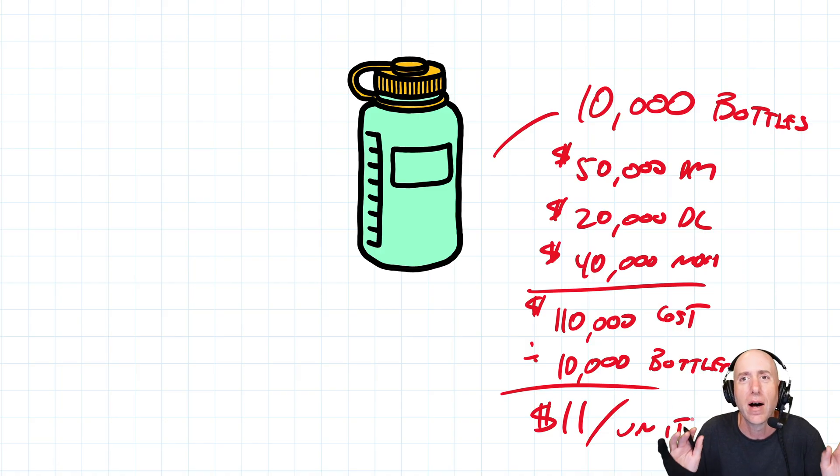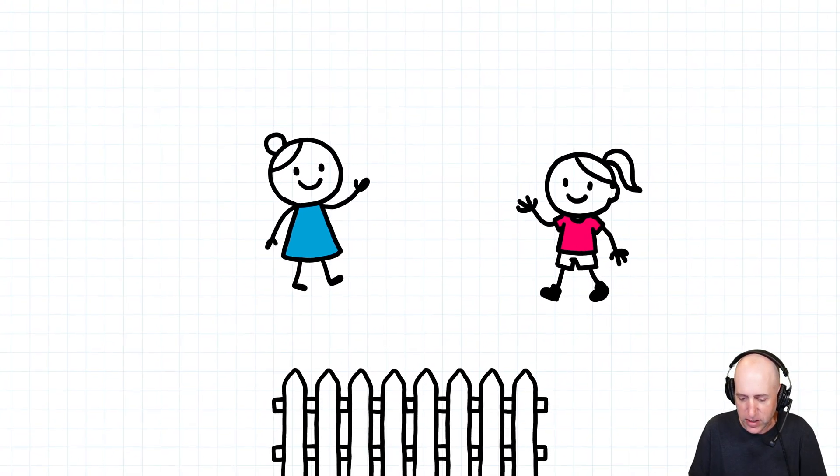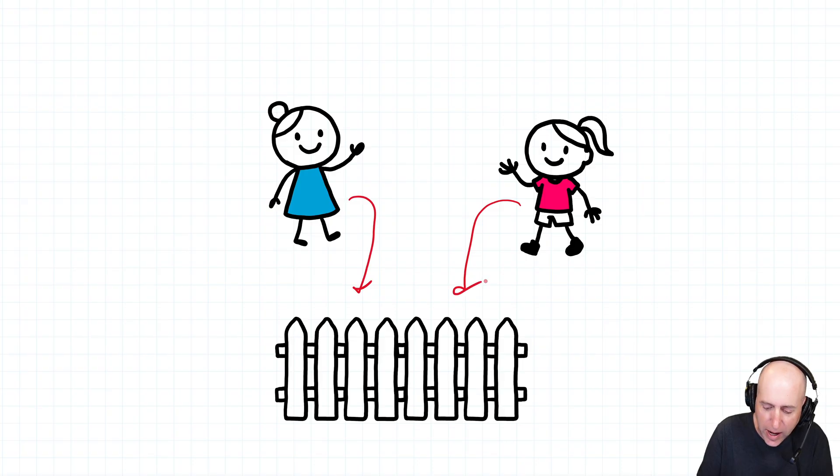So the key concept of the whole chapter is a concept called equivalent units. And to discuss equivalent units, I'm going to discuss these two sisters, Gabby and Bianca. They're sisters, they like each other, but they don't always agree on things. And they didn't agree when their father told them they had to paint the fence.